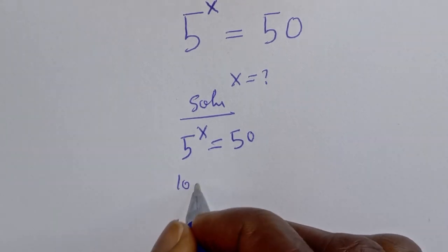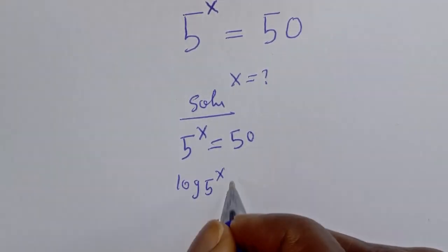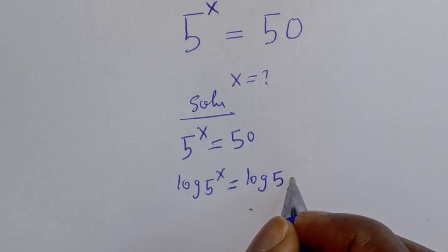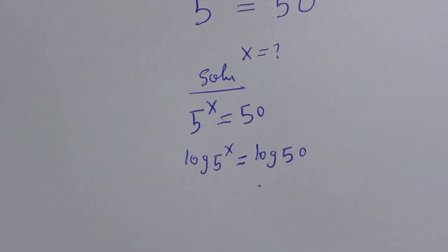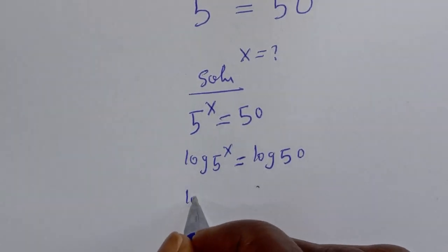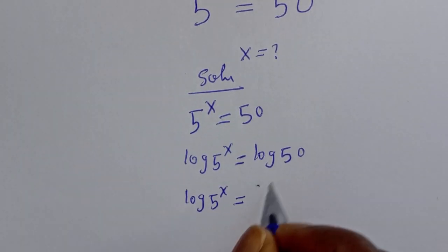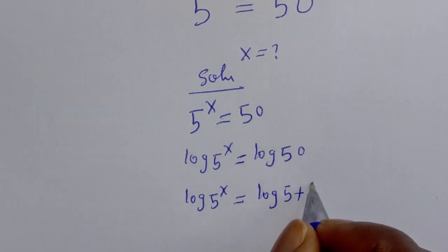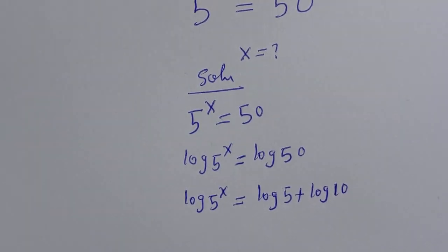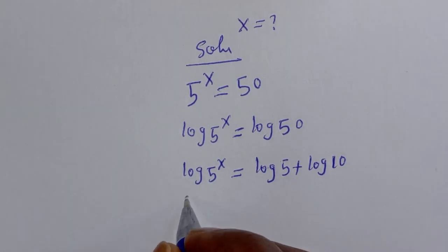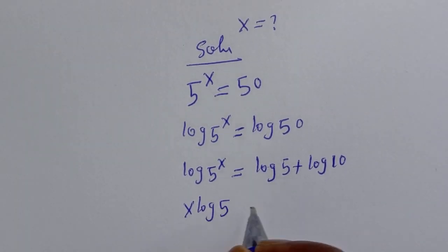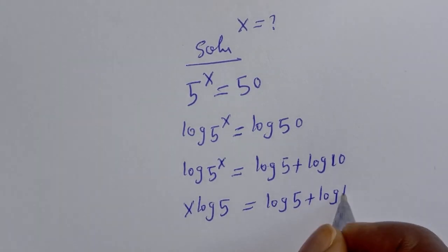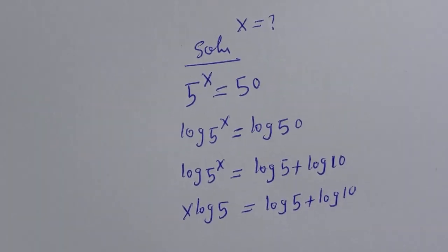We have log of 5 raised to the power s is equal to log 50. We can write log 50 as log 5 plus log 10. So s times log 5 is equal to log 5 plus log 10. Now let's divide both sides of this equation by log 5.